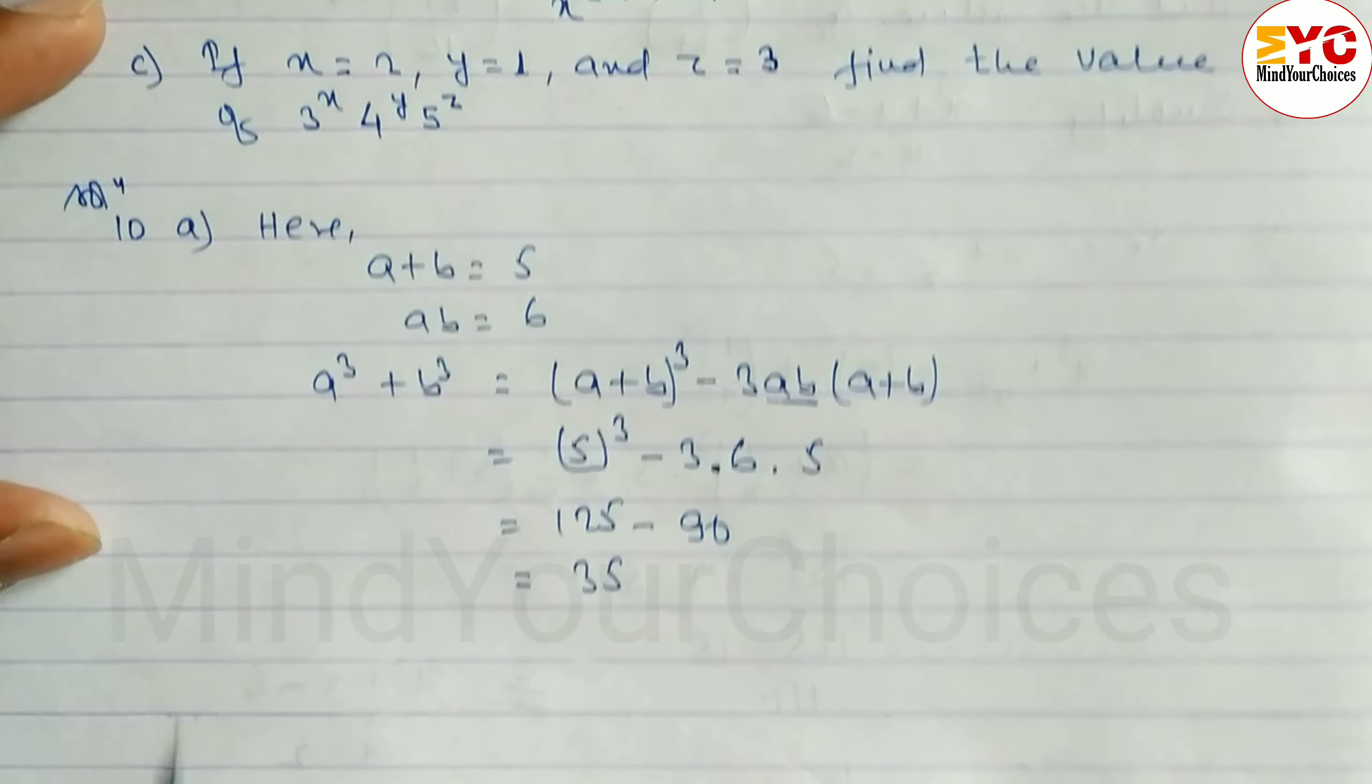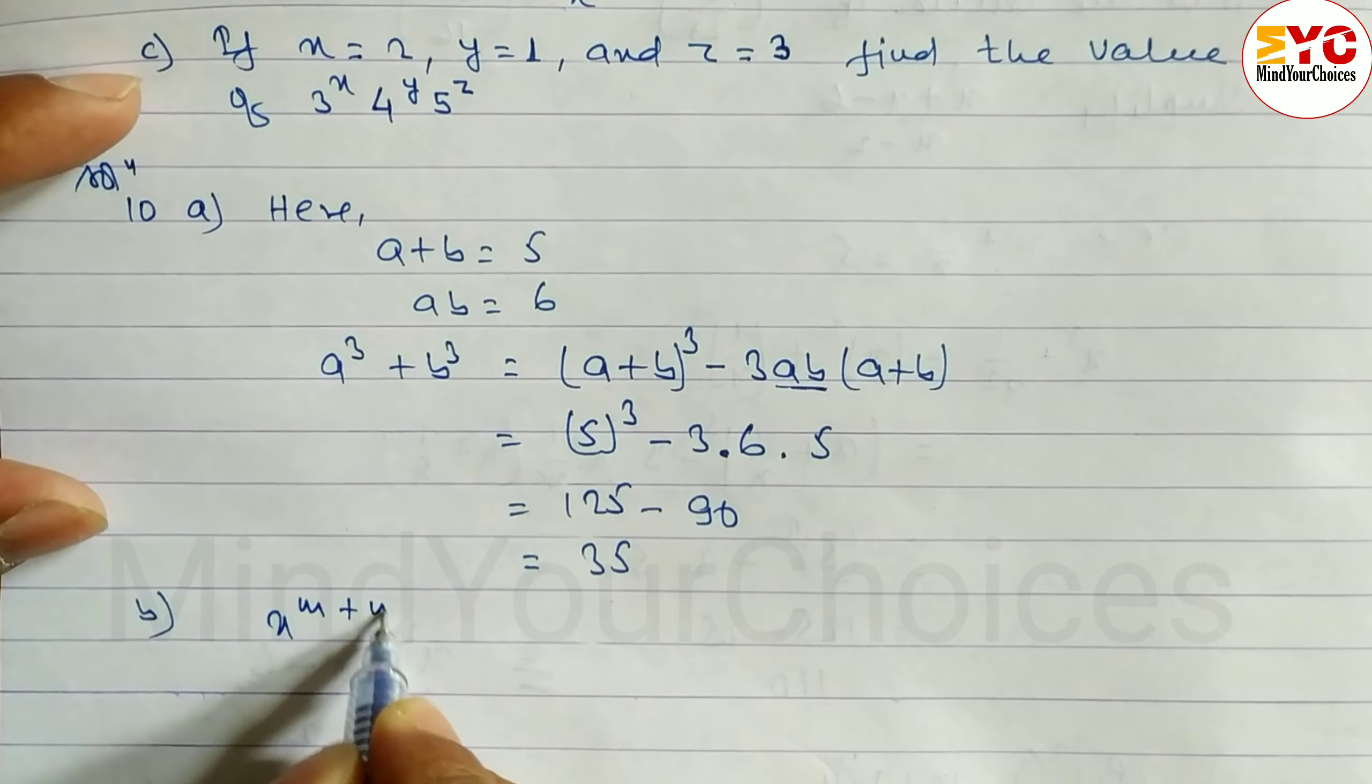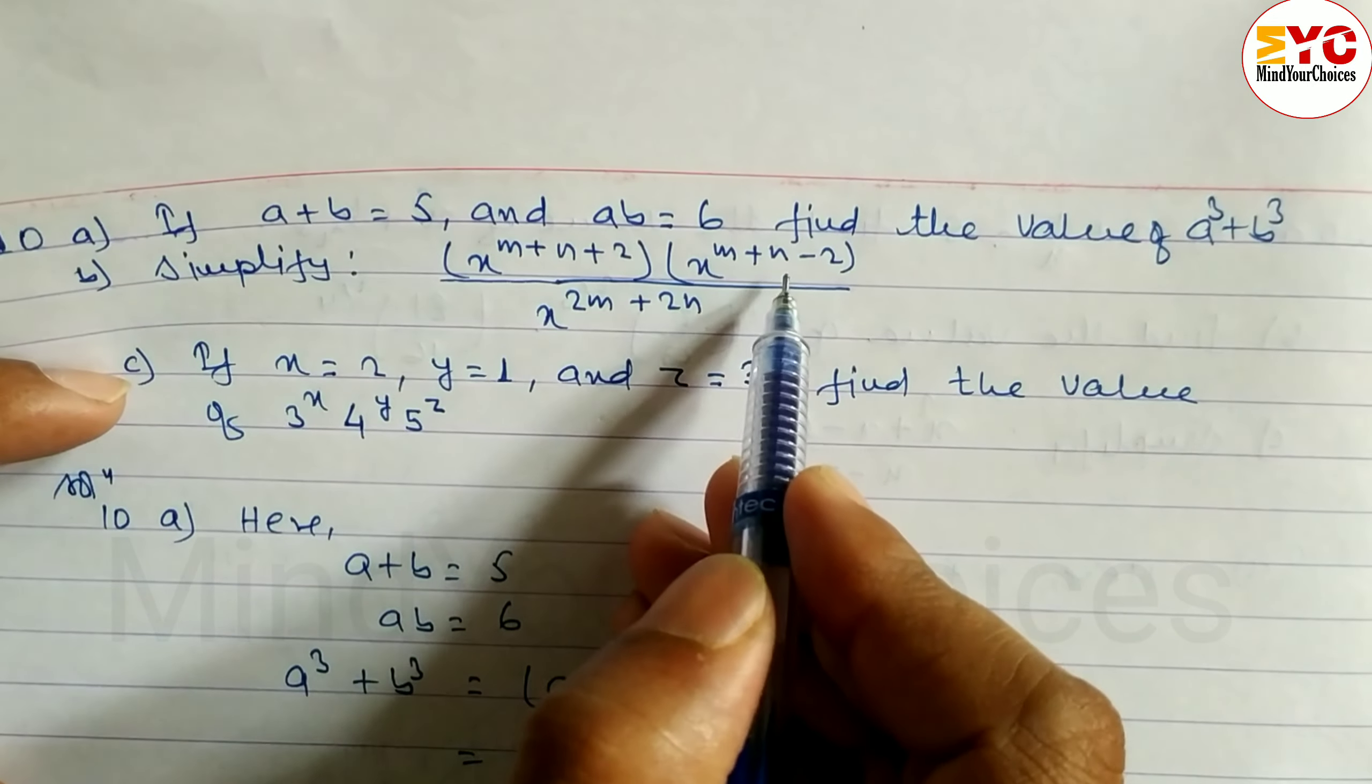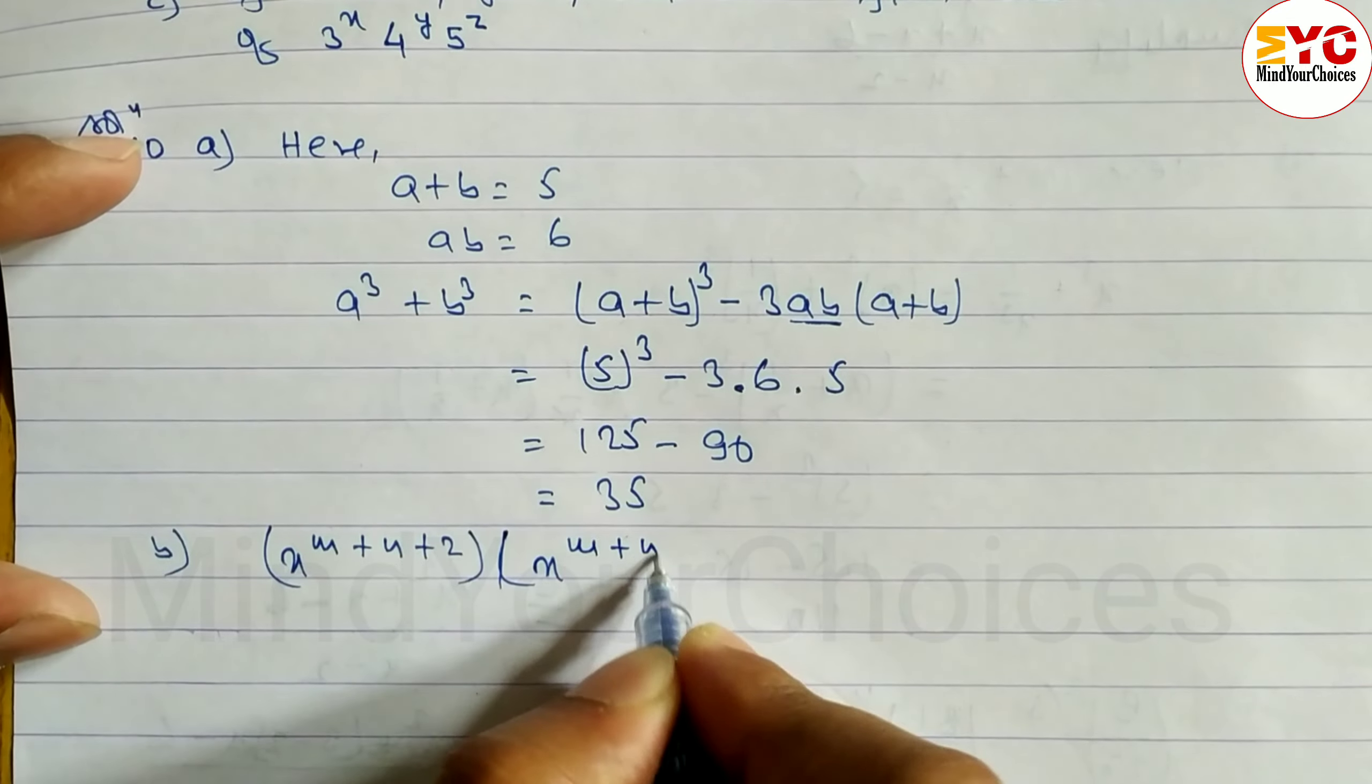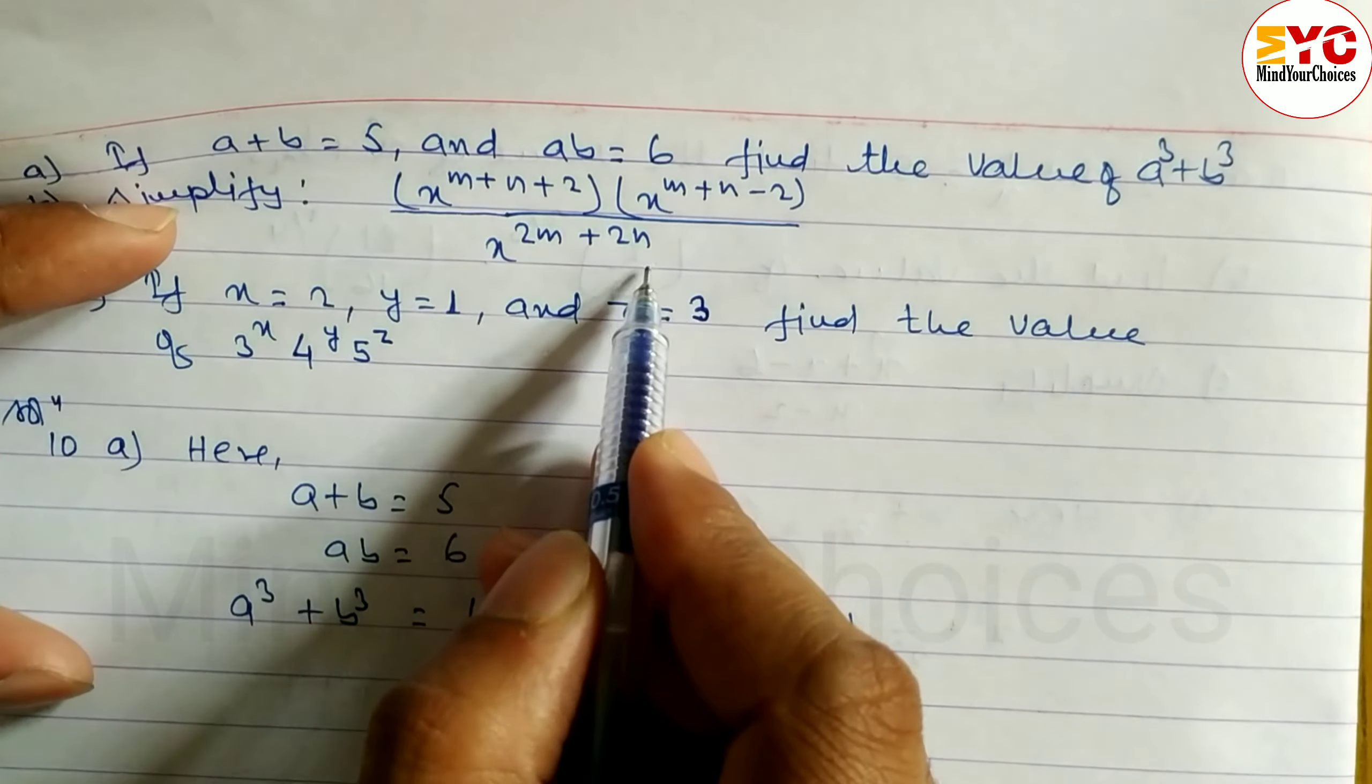Now look at question number B. Simplify x power m plus n plus 2 times x power m plus n minus 2 divided by x power 2m plus 2n.